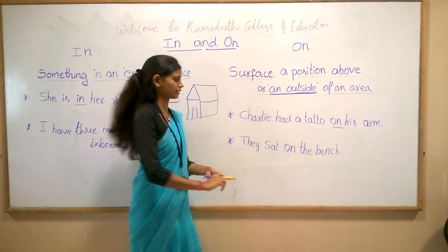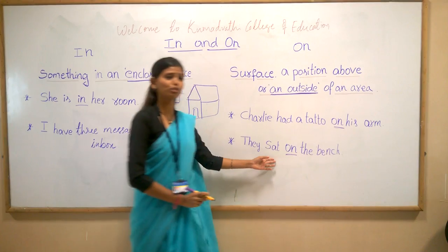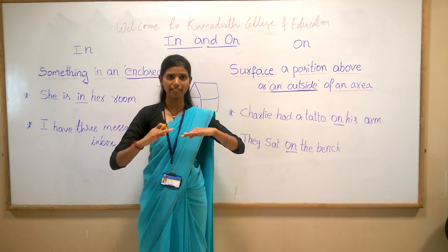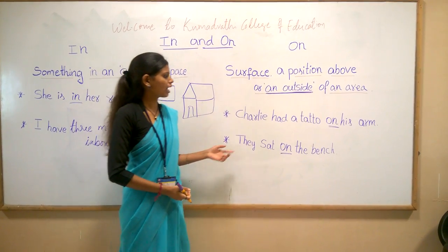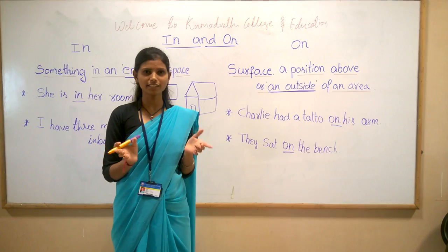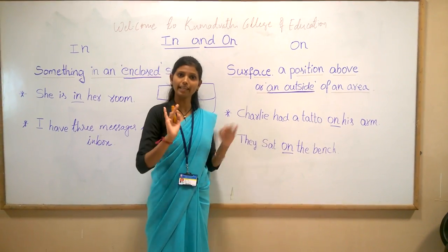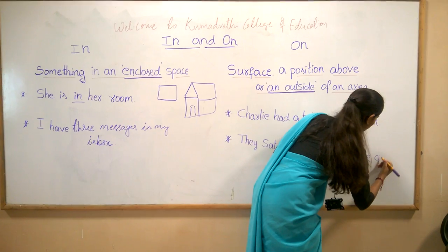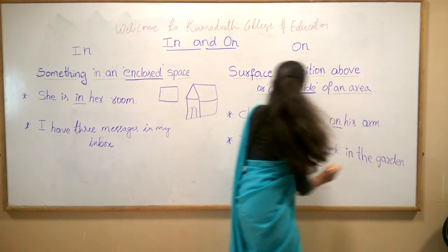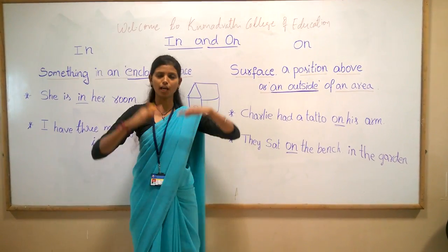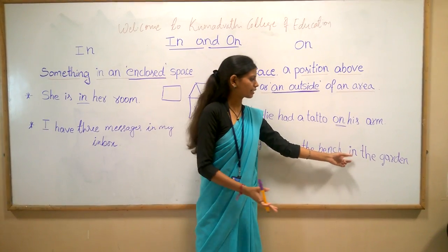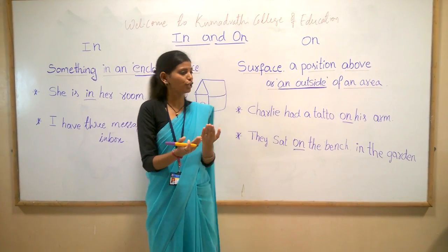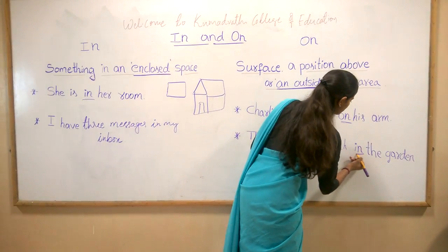Let's take the example: 'They sat on the bench.' Here I use the preposition 'on' because we are talking about a position above — they sat in a position on top of the bench. However, I could change the sentence a little: 'They sat on the bench in the garden.' Here, 'on the bench' shows position above, while 'in the garden' refers to an enclosed space with a physical limitation. So I use the preposition 'in' in that part of the example.